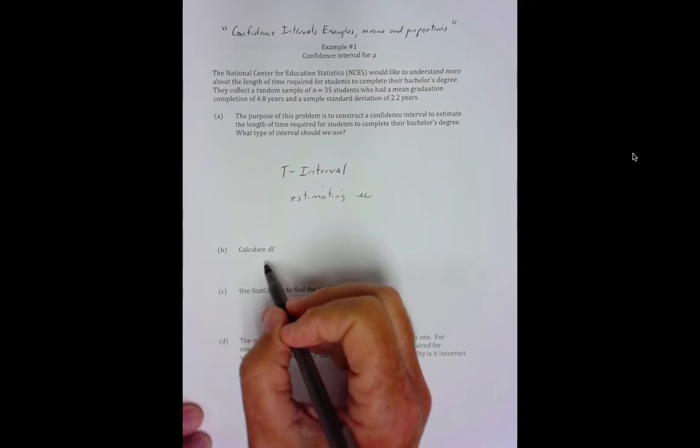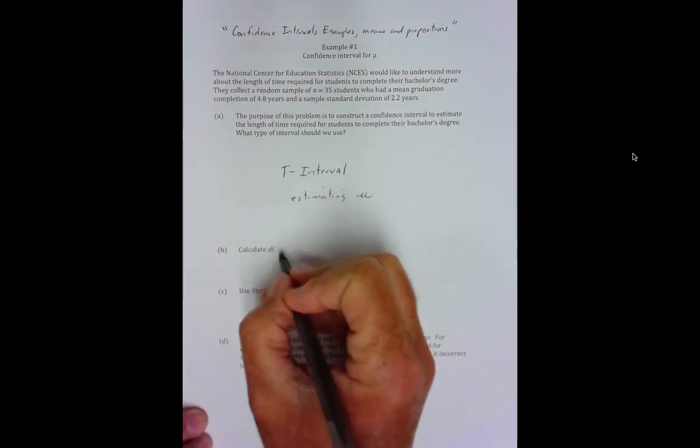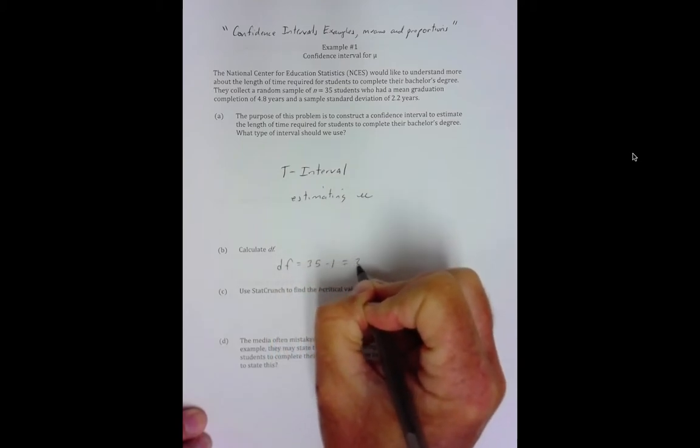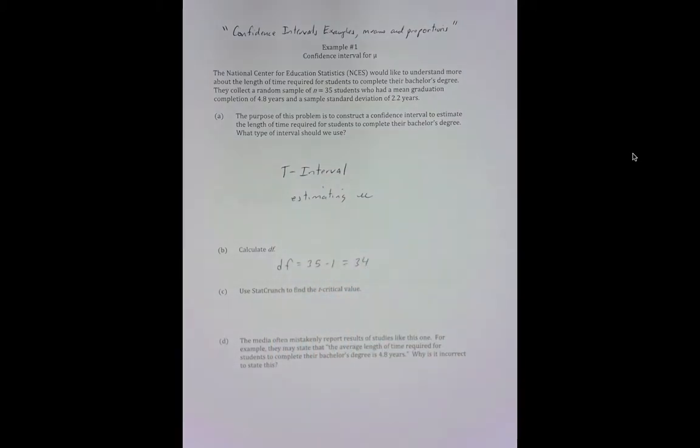What type of interval? This is called a T interval because we are estimating mu, which is the population mean, the length of time required for all students, not just these 35, but all students. Calculate degrees of freedom. This is really easy. One sample size is 35, so our degrees of freedom would be 34.